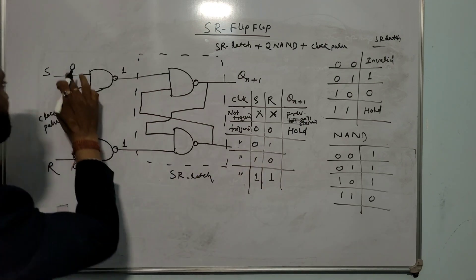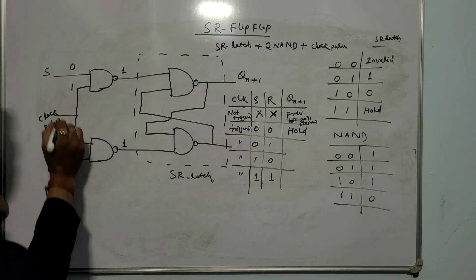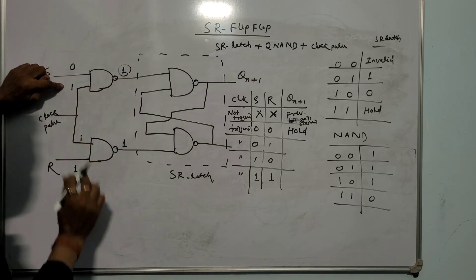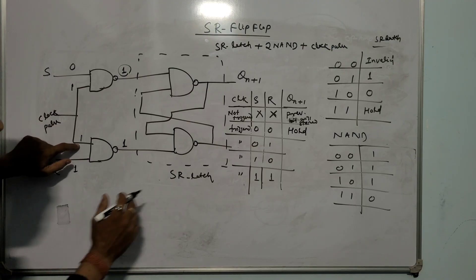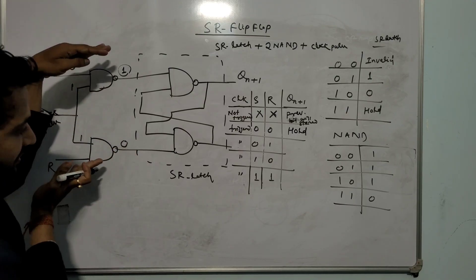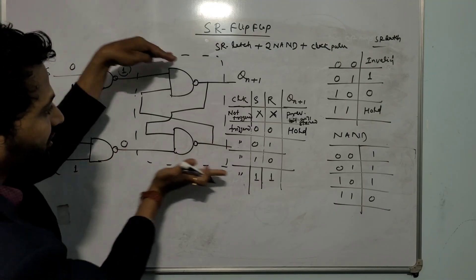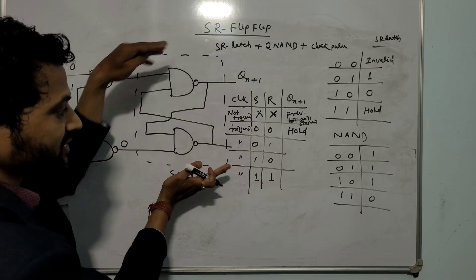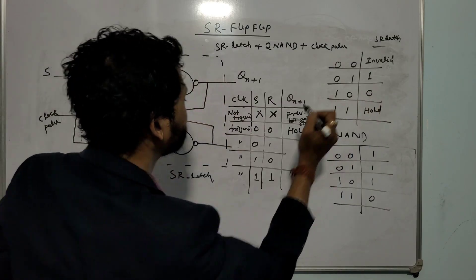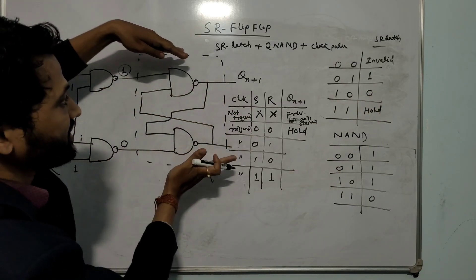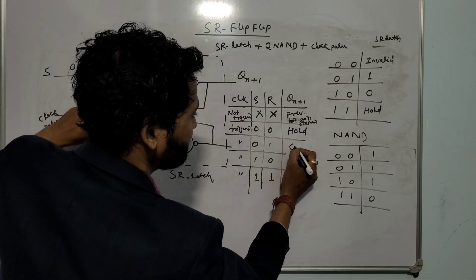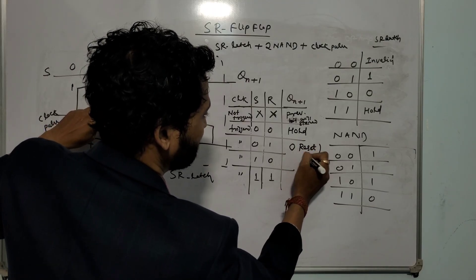Next combination is S=0, R=1. Clock pulse is given — by default it is 1. Here input to the first NAND gate is 1,1 — output is 0. But here for the other NAND gate, any one input is 0, so output is 1. So 1,0 is given to the SR latch. From the SR latch table, 1,0 gives output 0 — that means reset.